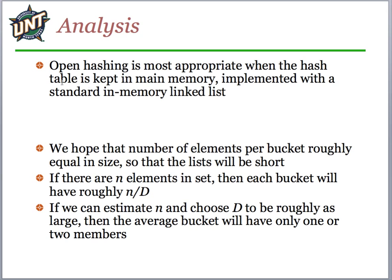When should you use each one? Open hashing is most appropriate when the hash table is kept in main memory, where in-memory linked lists work well. Closed hashing is typically used when data is being stored on disk. What we're hoping for is that the number of elements per bucket — the length of each linked list — is approximately equal, so the lists stay short. If n elements are in the set, each bucket should get approximately n over d values. We can choose a d value large enough so the average bucket has only one or two members.